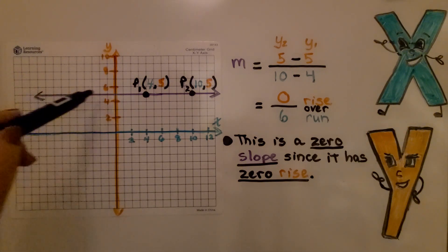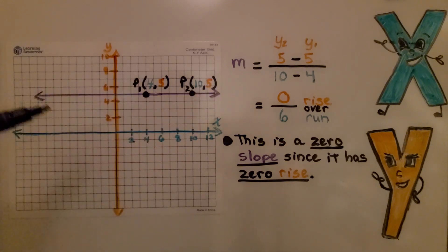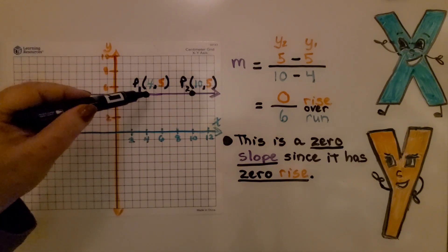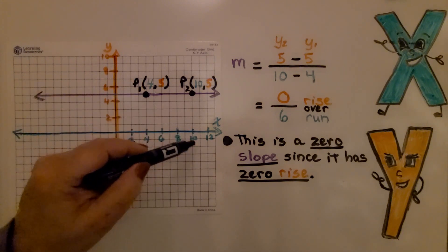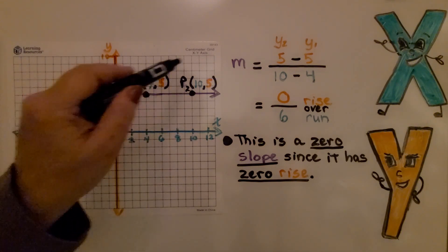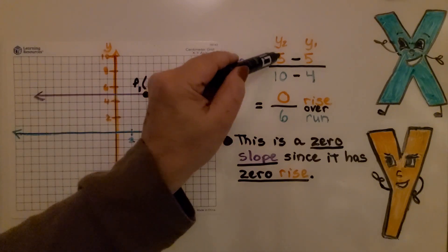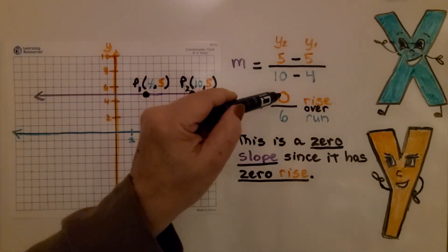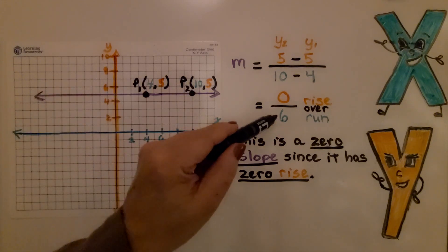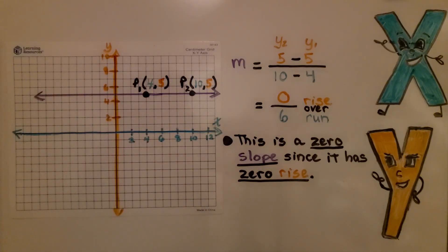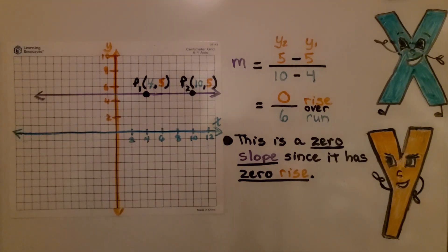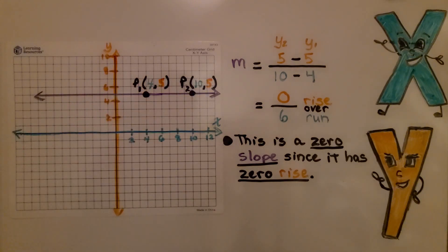Take a look at this line right here. It's going horizontal. For point 1, we have 4 for x and 5 for y. And for point 2, we have 10 for x and 5 for y. Notice the y values are the same. When we do 5 minus 5, we get a 0 for our rise. And then we do 10 minus 4 and get a 6 for our run. This is a 0 slope since it has a 0 rise. When you see a horizontal line, it's a 0 slope.